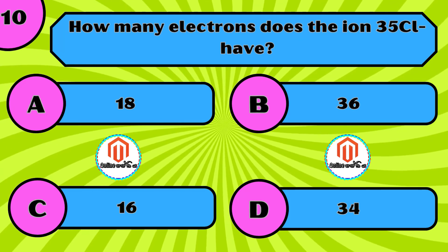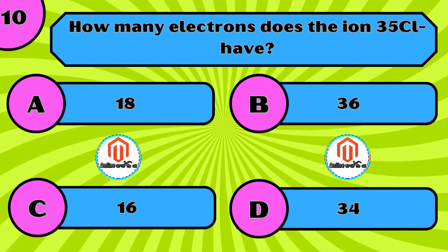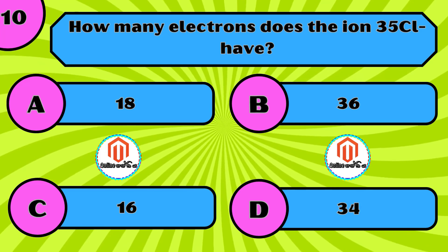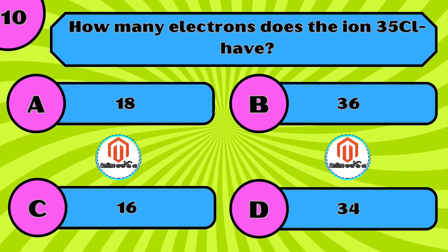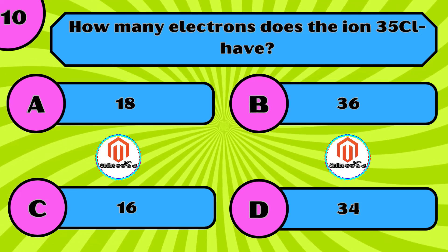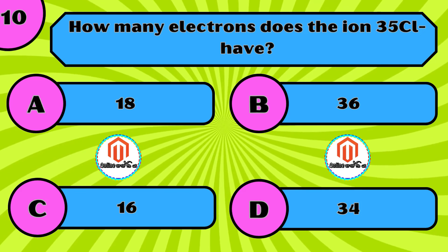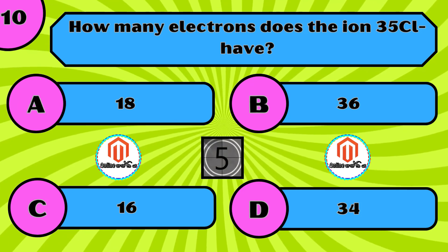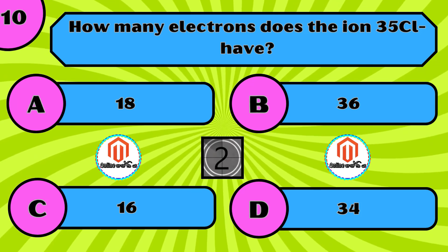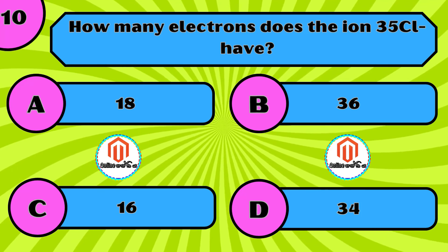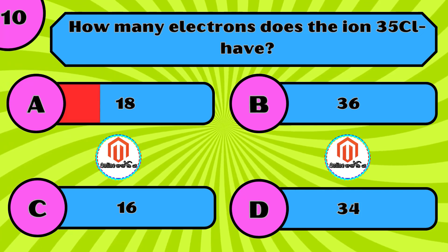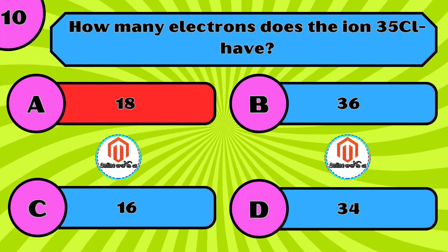How many electrons does the ion Cl-35 (chloride) have? A) 18, B) 36, C) 16, D) 34. The correct answer is A, 18.